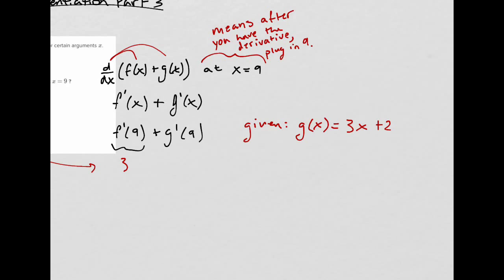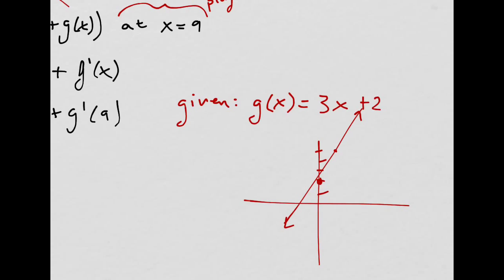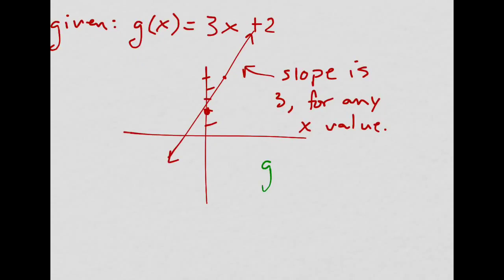Now, how are we supposed to find the derivative for this? Well, remember, the derivative is simply the slope of the tangent line. So if I graph this, 1, 2, 3 over 1, this slope is 3 everywhere. The slope is 3 everywhere. So that means g prime of x is just 3. Okay? g prime is 3.